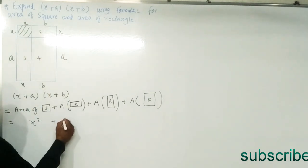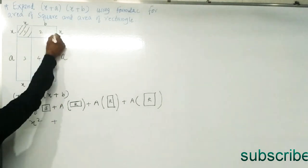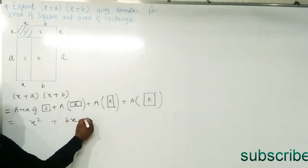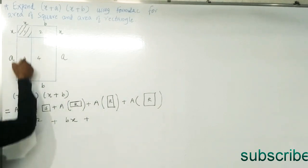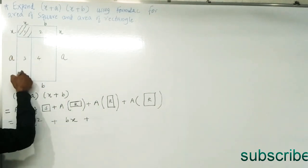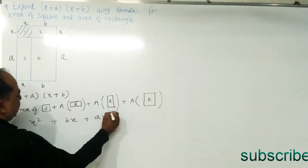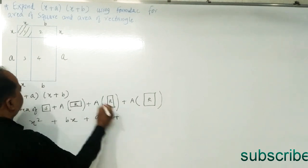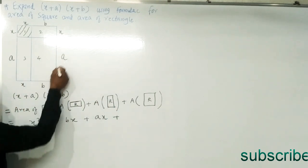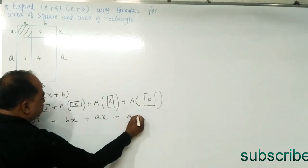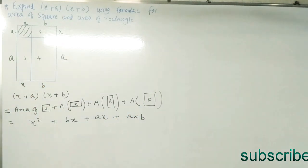Plus the area of rectangle number 2, which is length into breadth: length is b, so we get bx. The area of rectangle 3 is length into breadth, where length is a, giving ax. And the area of the 4th rectangle is length into breadth, that is a into b, giving ab.